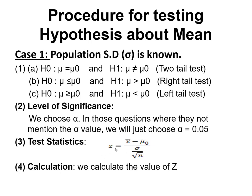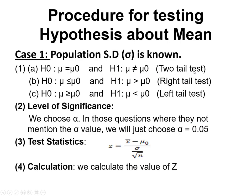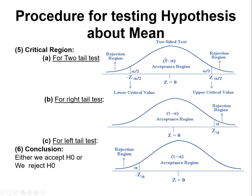In the fourth step, we calculate the z value by substituting the given population mean, the sample mean x-bar, the known population standard deviation, and sample size n into the formula. In Case 1, the population standard deviation is known — if they give you variance, take the square root to get standard deviation. In the fifth step, we construct the critical region depending on whether it is a two-tailed, right-tailed, or left-tailed test.